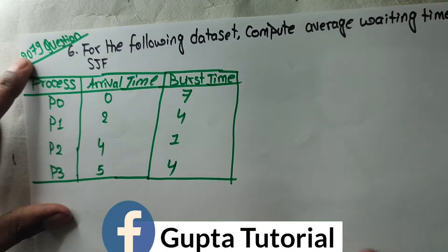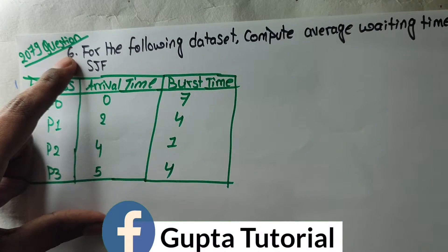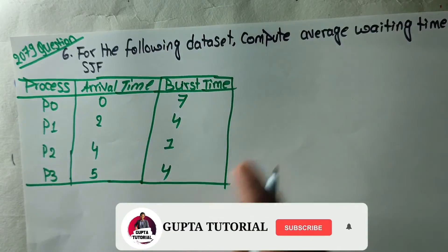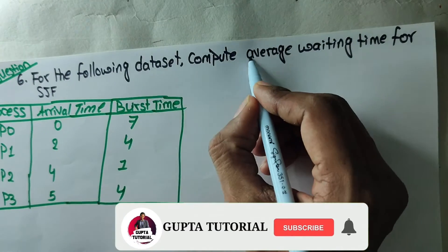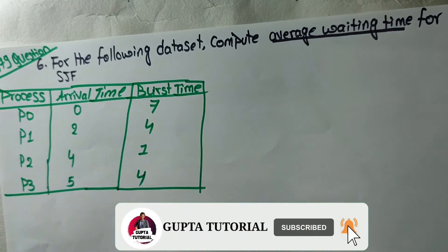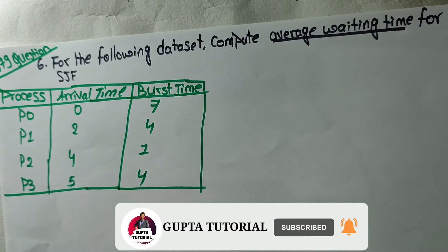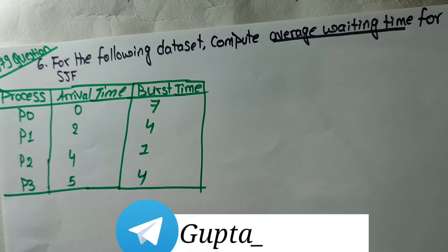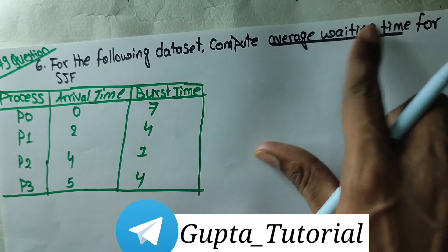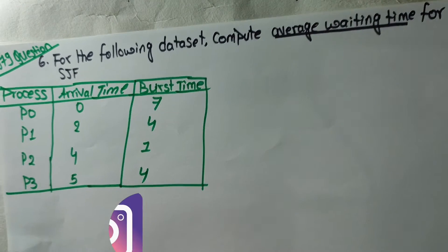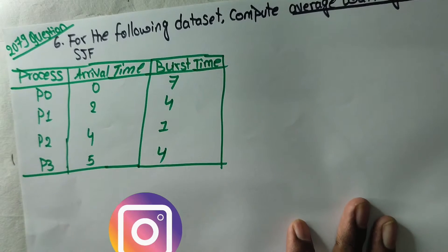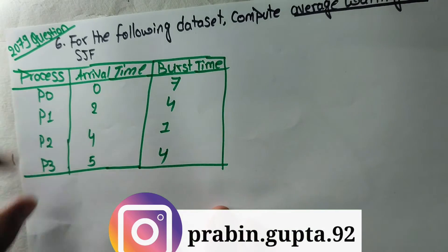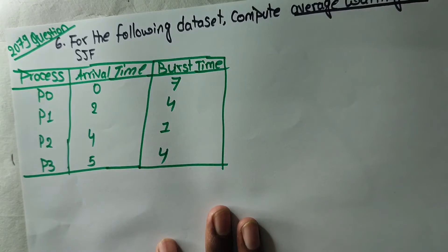This is question number 6. Average waiting time, total time, average waiting time. A diagram, Table U.